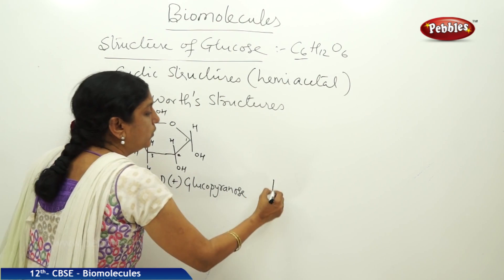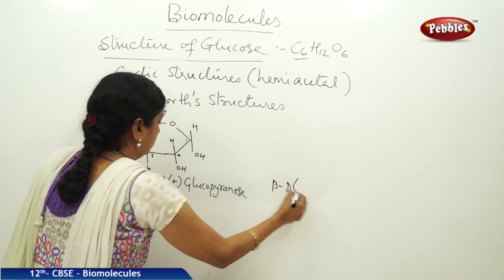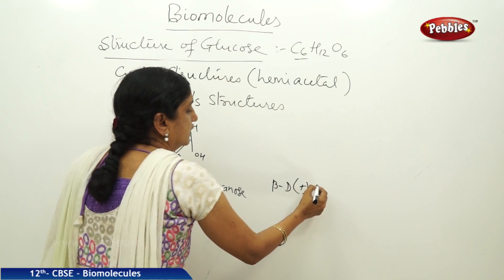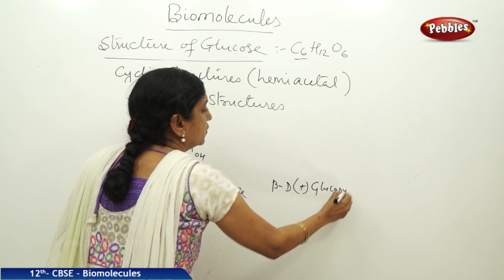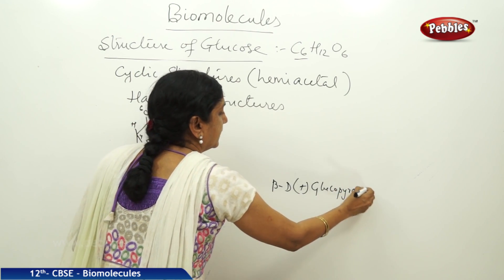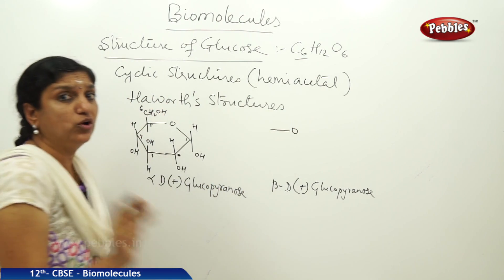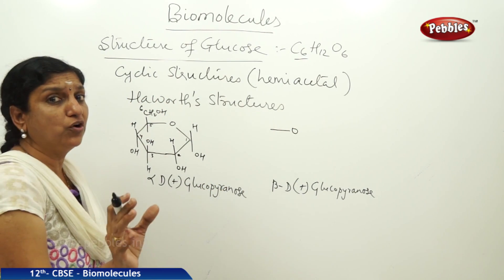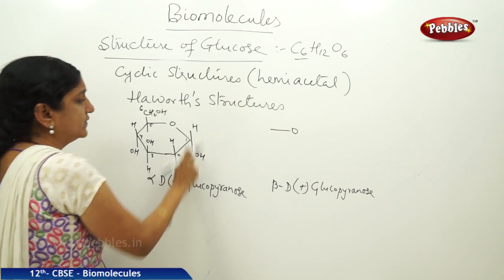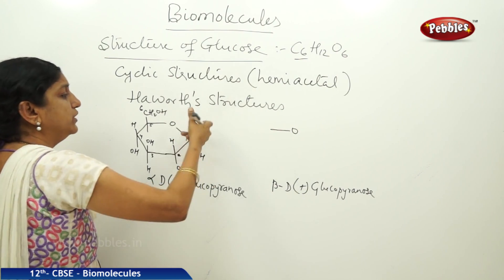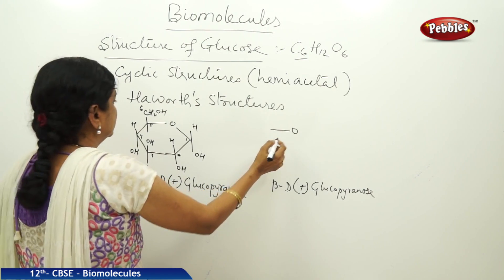And similarly, what would be the structure for beta D plus glucopyranose? Let us draw this structure also. Similar structure — they only differ in the configuration of OH at the C1 position, so only that is going to be reversed. The entire structure will remain as it is.